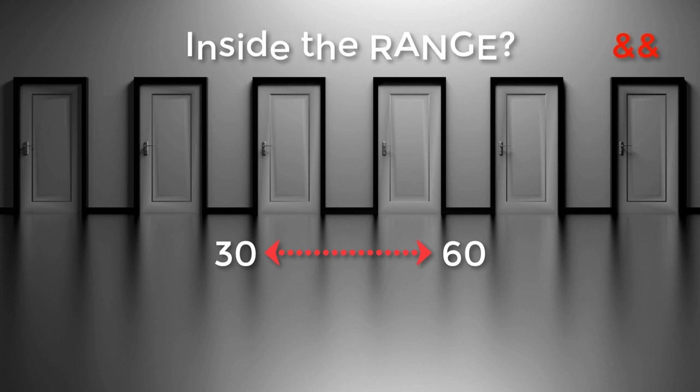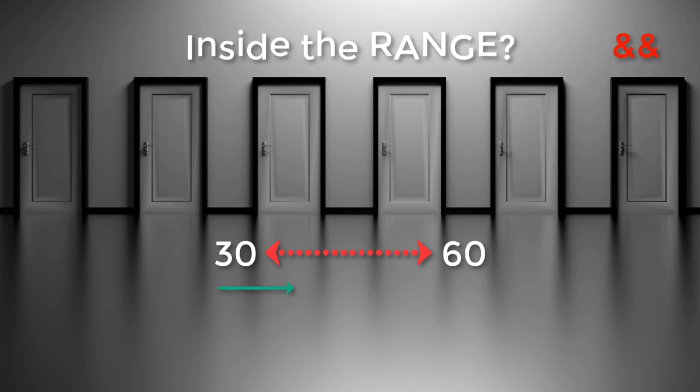So it would be 30, 31, 32 up until 58, 59, 60. So you will agree that it is all values greater than 30 but also less than 60.